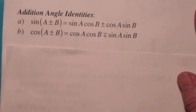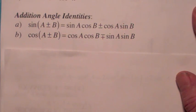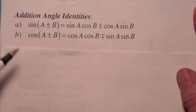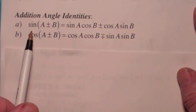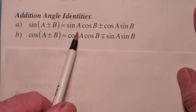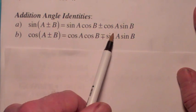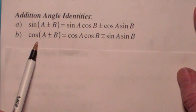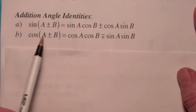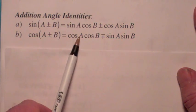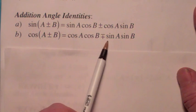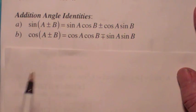The addition angle identities are kind of hard to remember, but they're going to come up even this quarter. The sine of the sum: sine of the first, cosine of the second, plus cosine of the first, sine of the second. If it's a minus, then you have a minus there. Cosine of the sum is cosine of the first, cosine of the second, minus sine of the first, sine of the second. So if there's an addition here, there's a subtraction there.